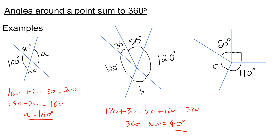Finally, to get C, we know that the angles we know are 60, 90, and 110. We add these up, which gives 260. To get C, we need to do 360 take away 260, which is 100. So C is 100 degrees.